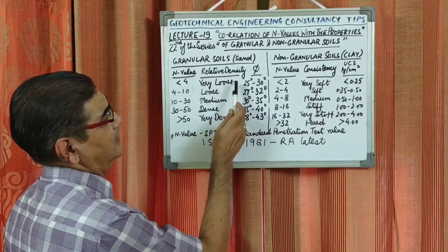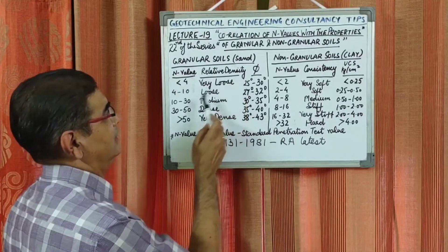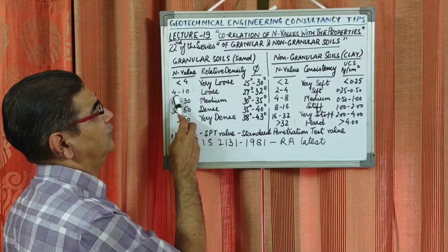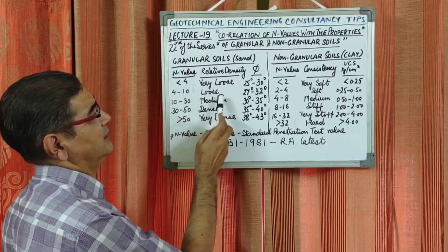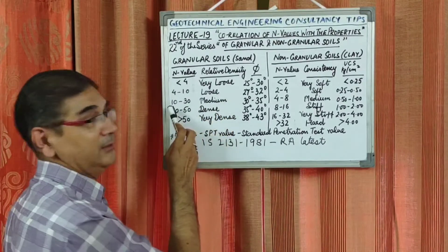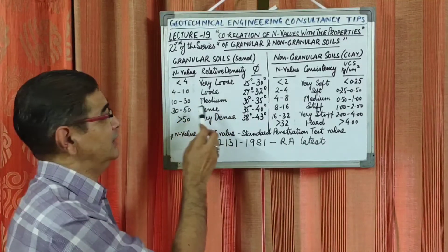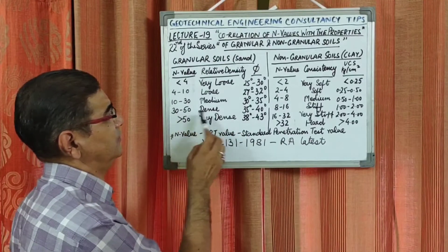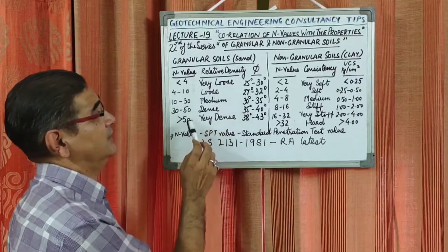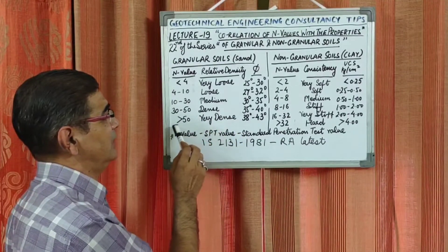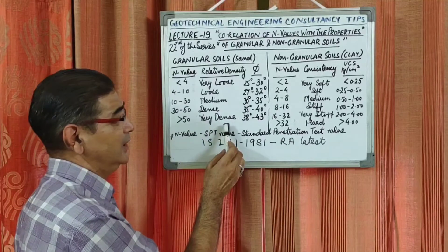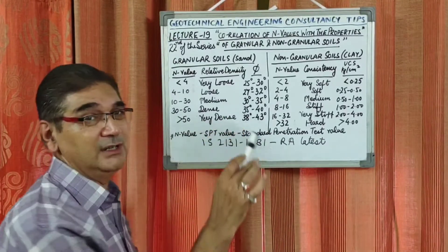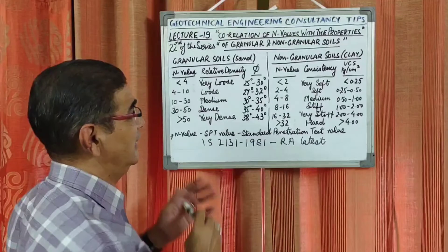For sandy soil classification by N-value: if N is less than 4, it is very loose sand; between 4 to 10 it is loose sand; between 10 to 30 it is medium dense sand; between 30 to 50 it is dense sand; and greater than 50 it is termed as very dense relative density sand.